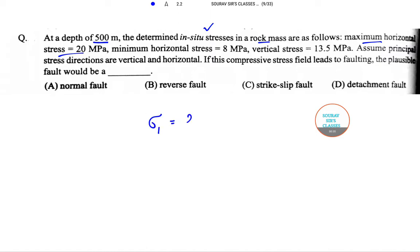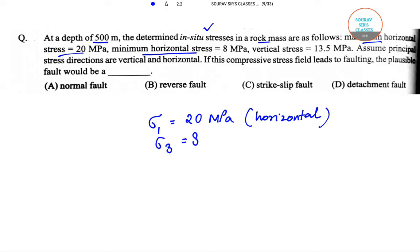Maximum horizontal stress is 20, so sigma 1 equals 20 MPa horizontal. Then minimum horizontal stress is 8, so sigma 3 equals 8 MPa horizontal. And lastly, the vertical stress is sigma 2 equals 13.5 MPa vertical.